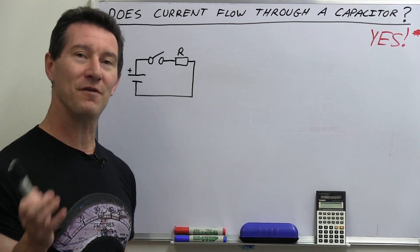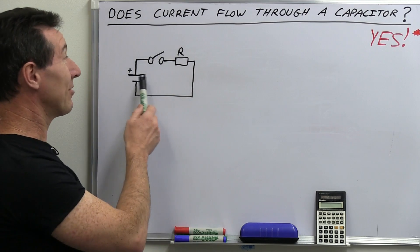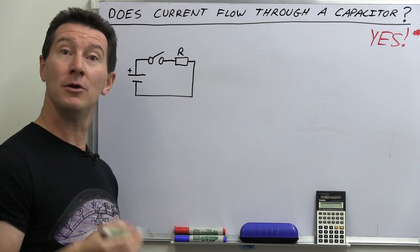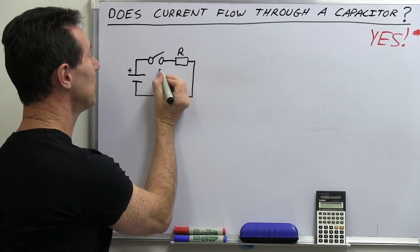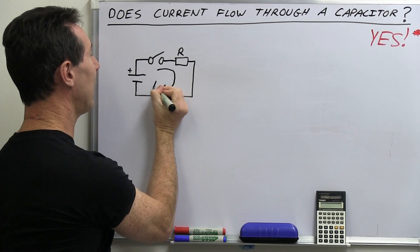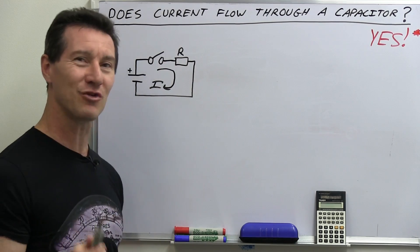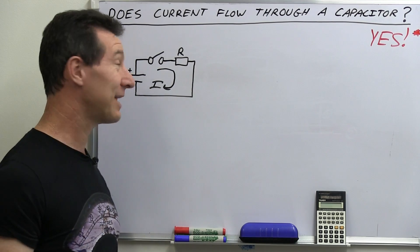And of course, it all starts out very basic, doesn't it? If you've got a battery here, a switch, and a resistor, then if the switch is open, no current flows. But as soon as you close the switch, current I flows through there.